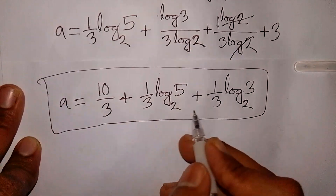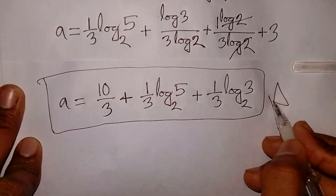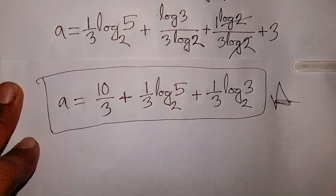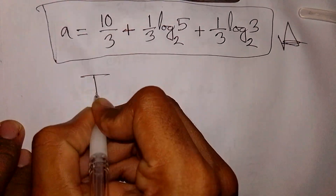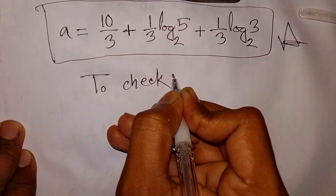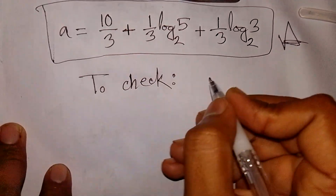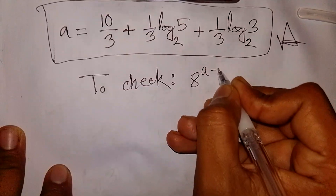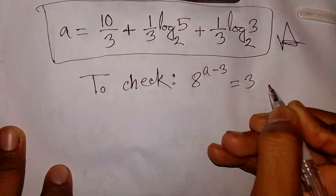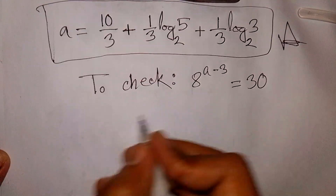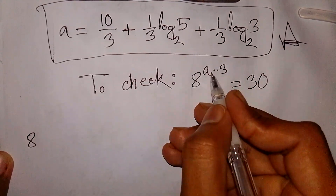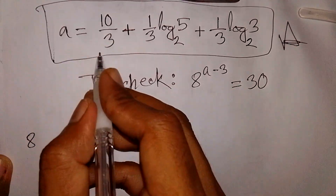Let's check the equation. The original equation was 8 to the power of (a minus 3) equals 30. So we substitute the value of a, which is 10/3 + (1/3)·log₂5 + (1/3)·log₂3, then minus 3.